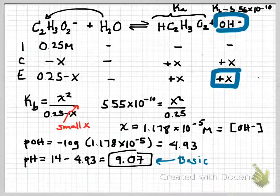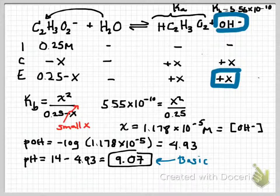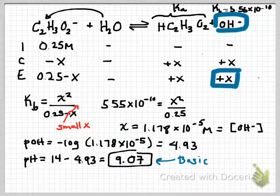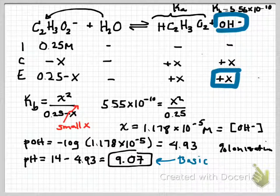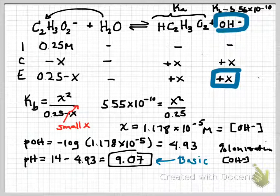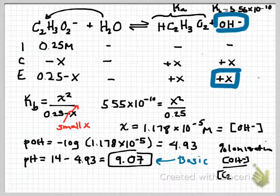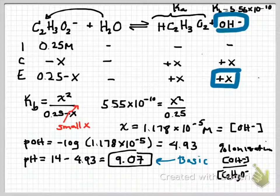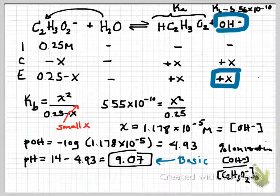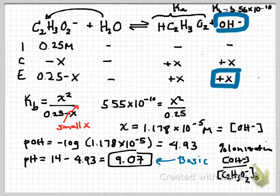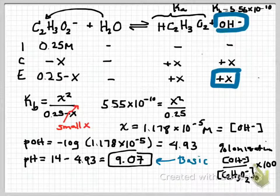You can go ahead and validate the assumption. When you validate the assumption by looking at the percent ionization, which is just our OH minus divided by our initial C2H3O2 minus, that number comes out to be 4.712 times 10 to the minus 3%, which is much less than 5%. Therefore, this is a valid assumption to do small x.